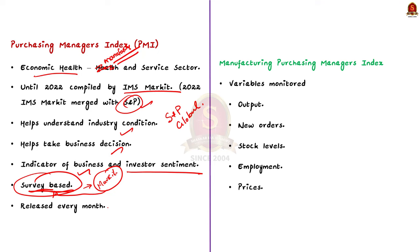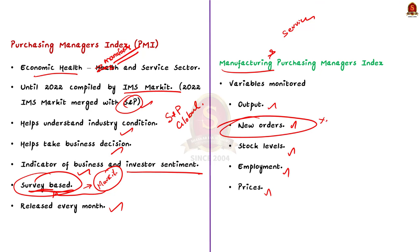The key features of the PMI are that it is released on a monthly basis and is not revised after publication. There are two PMIs released for India — one for the manufacturing sector and one for the service sector. For the Manufacturing PMI, five variables are monitored: output, new orders, stock levels, employment, and prices. Of these five variables, new orders has the highest weightage.